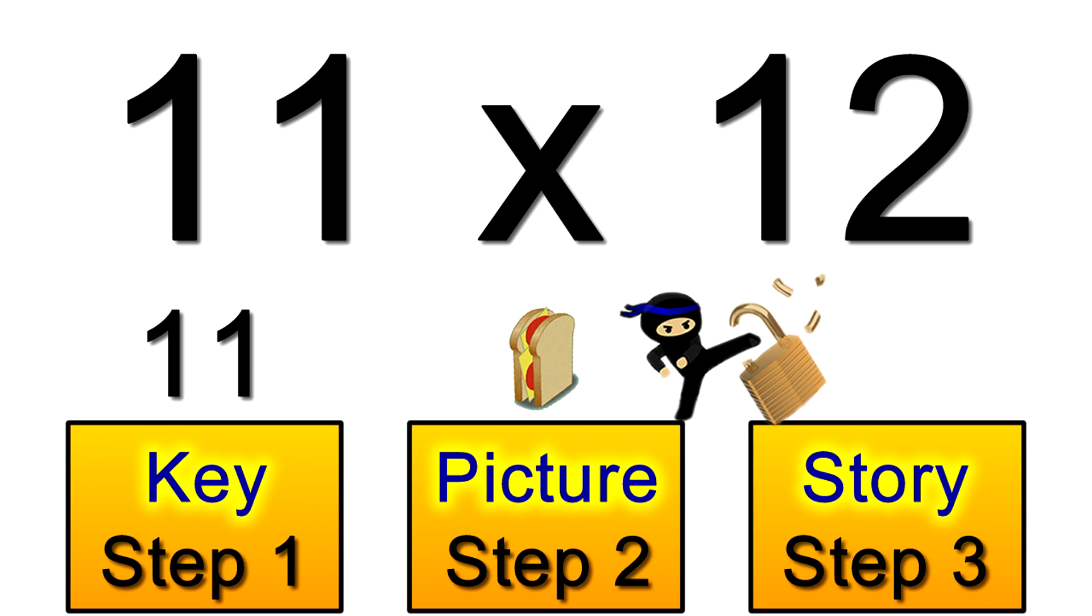And so for step 3, the story we run in our mind is to make a sandwich using the other part of the problem, the 12. It goes like this: we put the 1 and 2 on the slices and then for a filling we add 1 and 2 together to get 3. So we have 1, 3, 2. Our answer is 132.